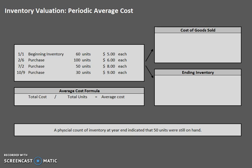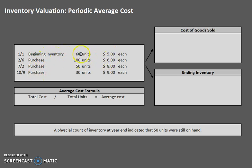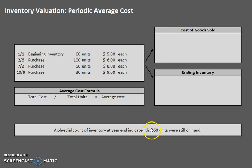Average cost, unlike FIFO and LIFO, we are going to be using a formula. Just as a quick reiteration, we have some information up here that tells us our beginning inventory and our purchases — we start with 60 units at $5, 100 at $6, and so on. We also have information down here that tells us how many units were on hand at the end of the year. Only 50 remained at the end of the year, which means the rest were sold.